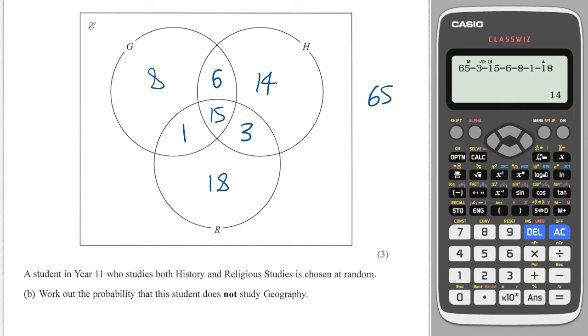Moving on to part B, it says a student studies both history and religious studies is chosen at random. Straight away before I even read the rest of the question, because someone has been chosen and we know they study history and religion. Then it says work out the probability that this student does not study geography. Well, of the people shaded in green, the people who don't study geography is this section here. So my probability is those 3 people out of the 18 people who study history and religion, which of course could be simplified to one-sixth if you wish.